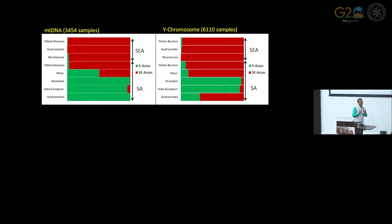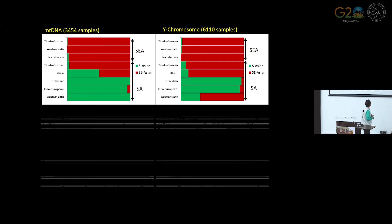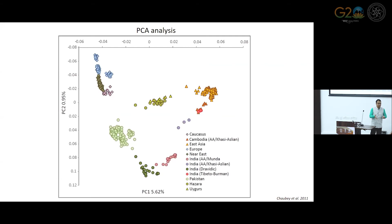First we looked at the mitochondrial DNA. Here the green color shows Indian ancestry and the red color shows Southeast Asian ancestry. Indian Austro-Asiatic speakers are carrying 100 percent Indian ancestry in their mitochondrial DNA, whereas in their Y chromosome — their paternal ancestry — around 70 percent is associated with the Southeast Asian population. This means their maternal and paternal ancestry show very distinct population histories: maternal history connects them 100 percent with India, but paternal ancestry connects them around 70 percent with Southeast Asia. We also ruled out an isolation-by-distance model as the cause of this structure.